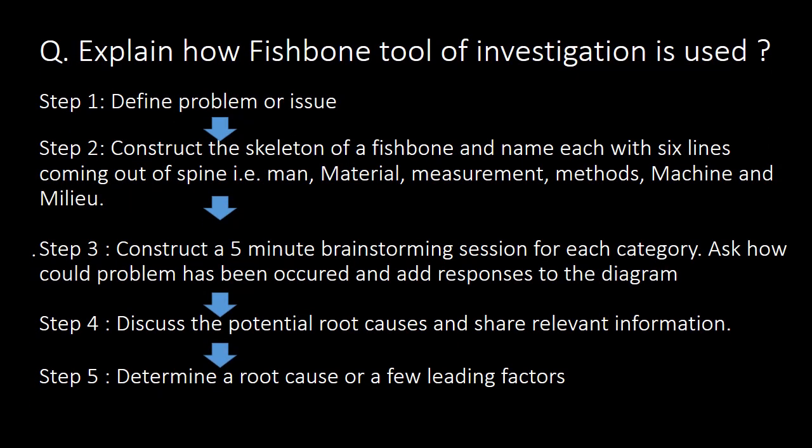Next question: explain how the fishbone tool of investigation is used. It is used in five steps. Step 1: define the problem or issue. Step 2: construct the skeleton of the fishbone and name each of the six lines coming out of the spine — man, material, measurement, method, machine, and milieu. Step 3: conduct a five-minute brainstorming session for each category; ask how the problem could have occurred and add responses to the diagram. Step 4: discuss the potential root causes and share relevant information. Step 5: determine the root cause or a few leading factors.